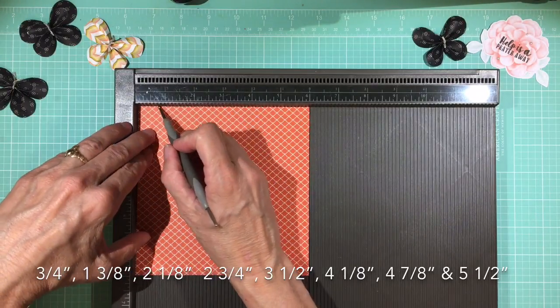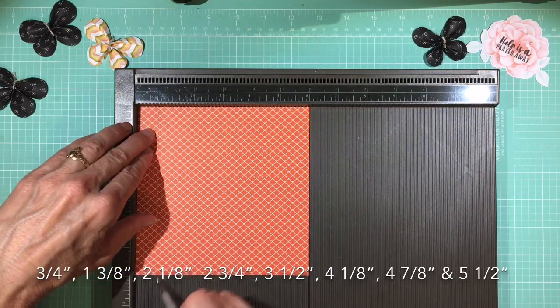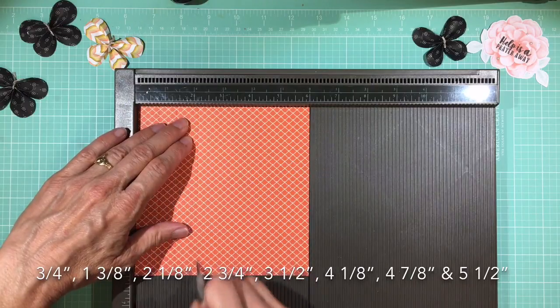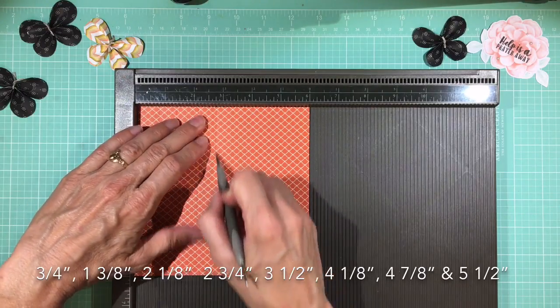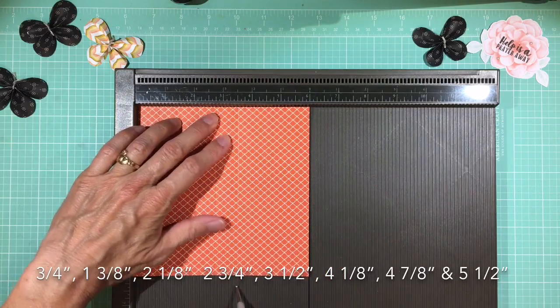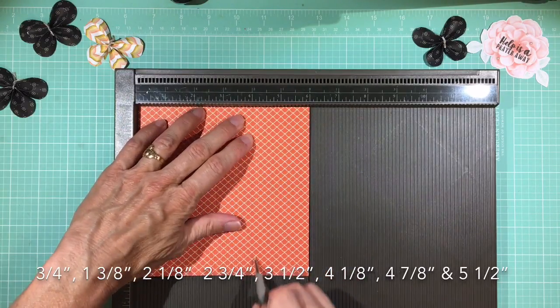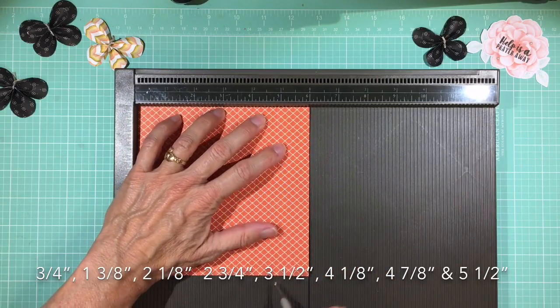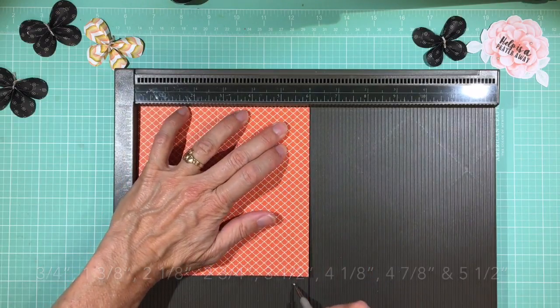So let's score at 3 quarters of an inch, 1 and 3 eighths, 2 and 1 eighth, 2 and 3 quarters, 3 and 1 half, 4 and 1 eighth, 4 and 7 eighths, and 5 and a half.